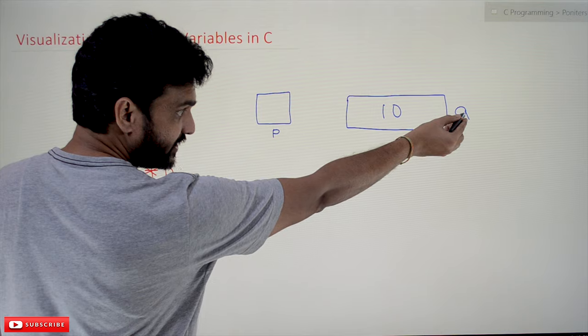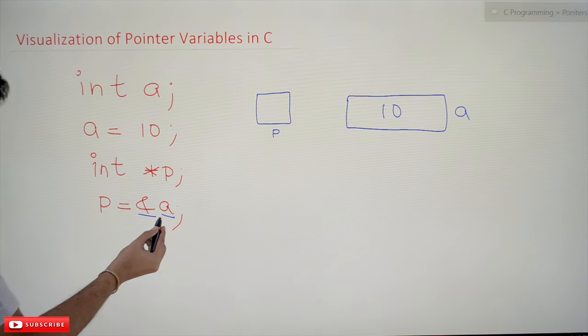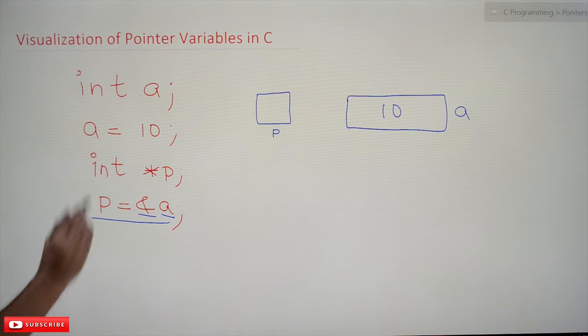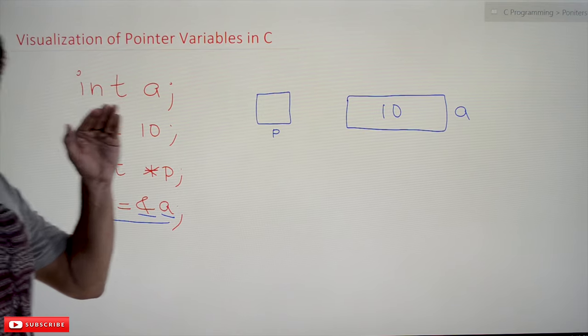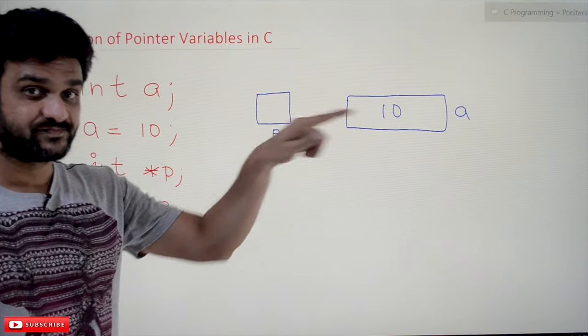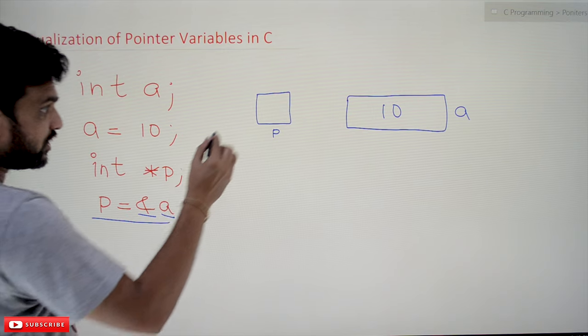So how this visualization can be made is by using an arrow mark symbol. That is why we call it as pointers. How? P is pointing towards a.